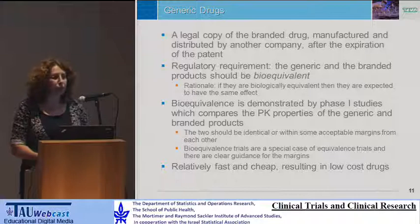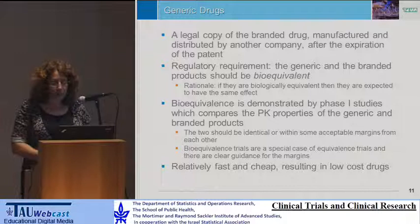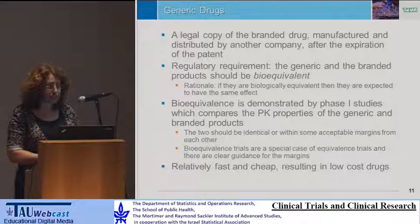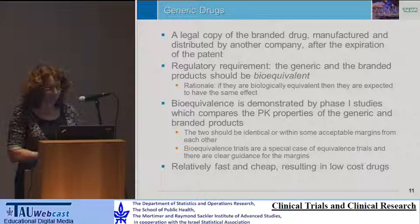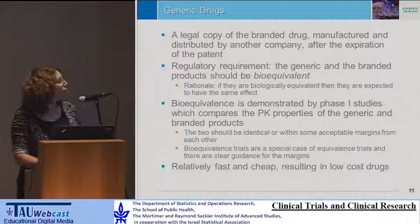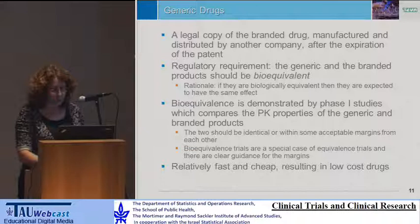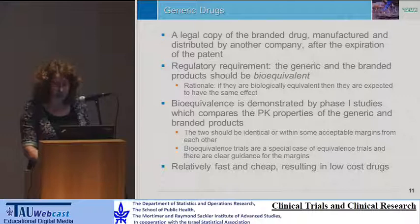Another topic is generic drugs. A generic drug is a legal copy of a branded drug, manufactured and distributed by another company after the expiration of the patent. The regulatory requirement for approval is that the generic and branded product should be bioequivalent — demonstrated in a series of phase one studies comparing the pharmacokinetic properties of the generic and branded products. If the two are biologically equivalent, they are expected to have the same effect. This process is much faster than the full phase one, two, and three sequence, resulting in cheaper drugs.